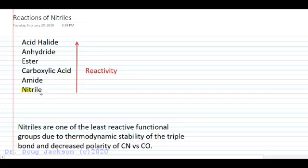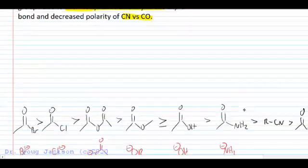Let's look at reactions of nitriles. Among our carboxylic acids and derivatives, nitriles are the least reactive except for carboxylates. That's because of the thermodynamic stability of their triple bond and the decreased polarity of CN versus CO. Oxygen being more electronegative, carbonyls are a little bit more attractive to reaction.